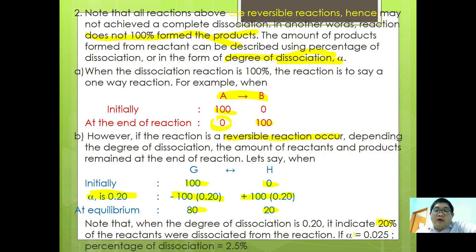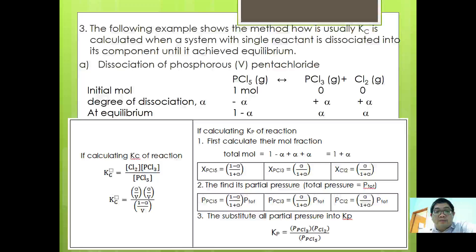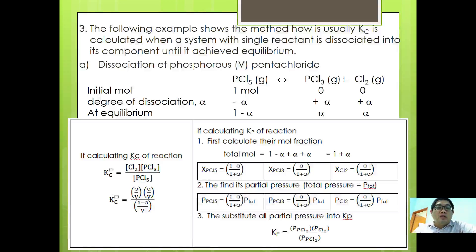If alpha is 0.25, then the percentage of dissociation is 25%. The following example shows the method of how Kc is calculated when a system with a single reactant is dissociated into components until equilibrium is achieved.